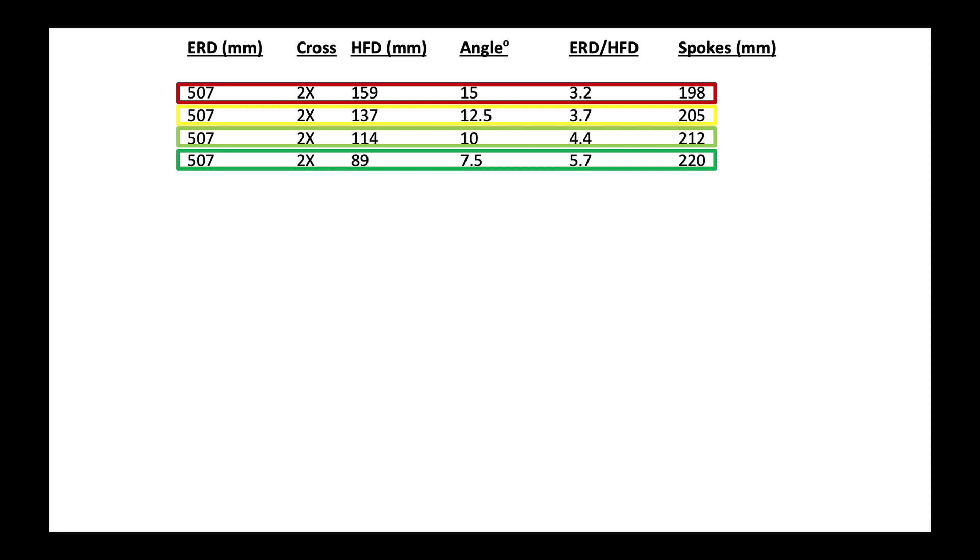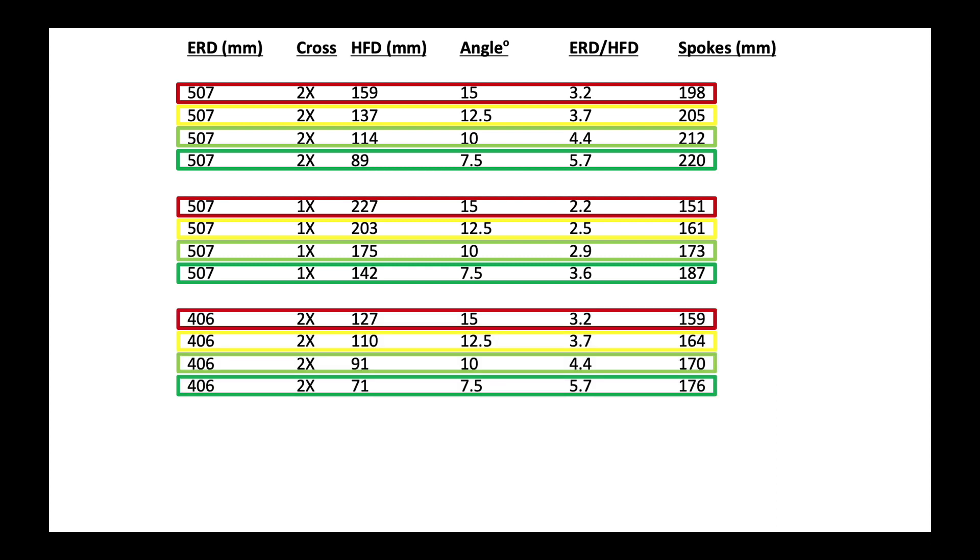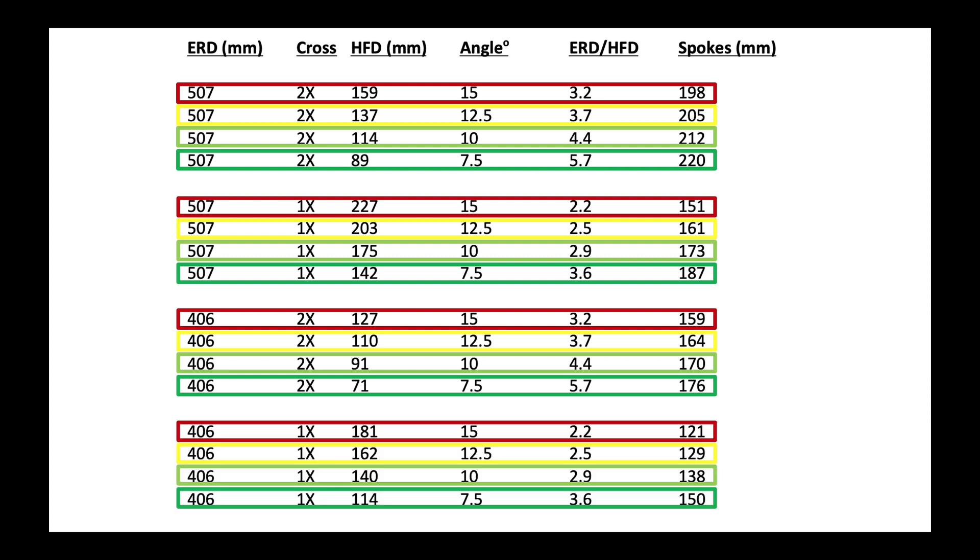And on we go here to an ERD of 507 millimeters. The same comparison of a two cross and a one cross. And getting really small with a 406. And then finishing that out we get the same pattern.